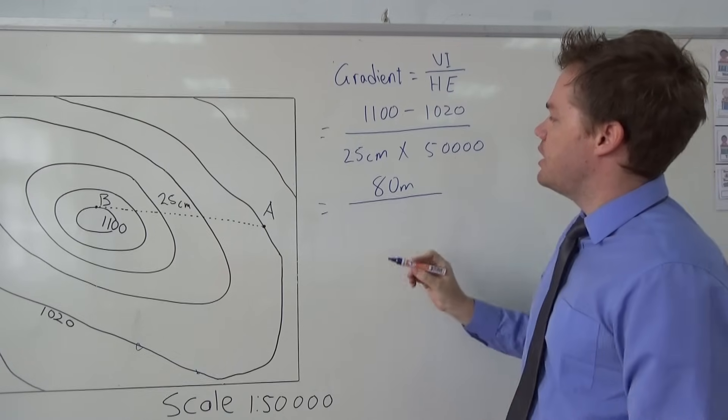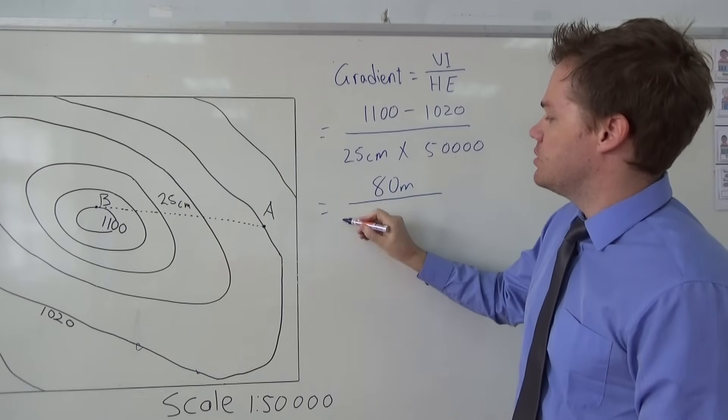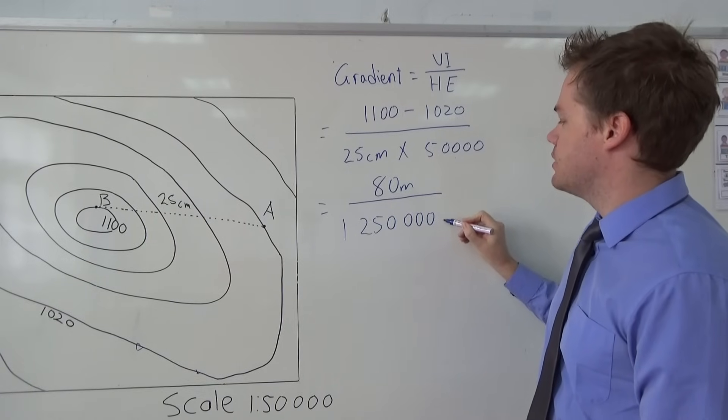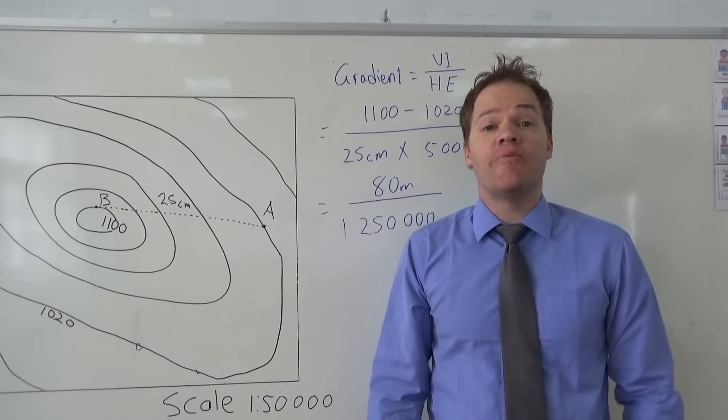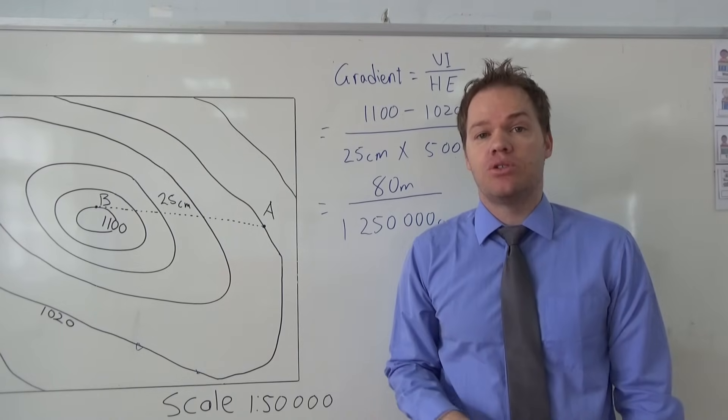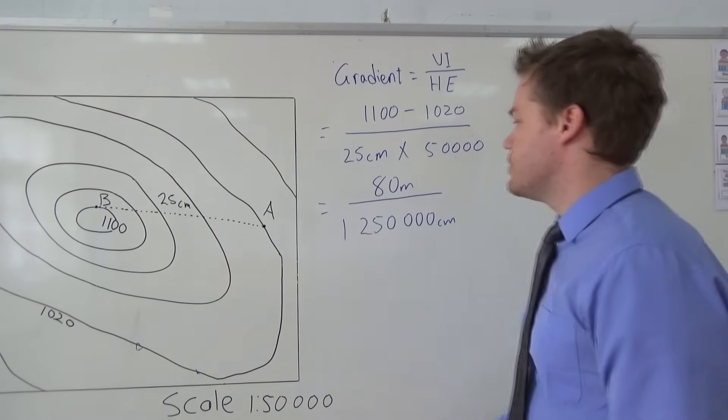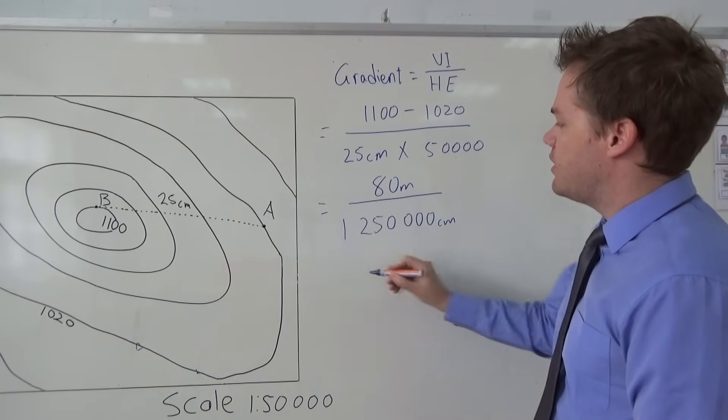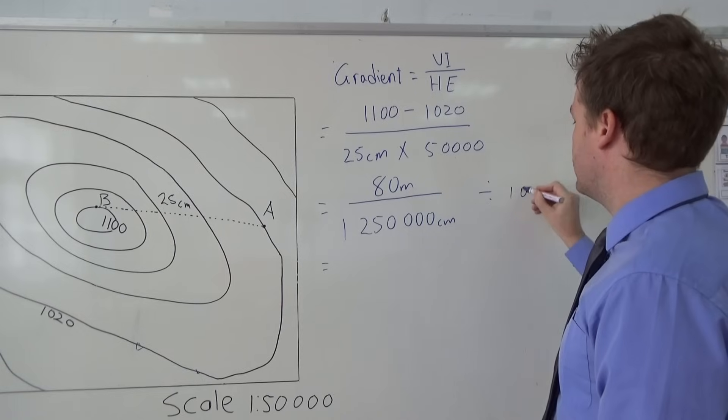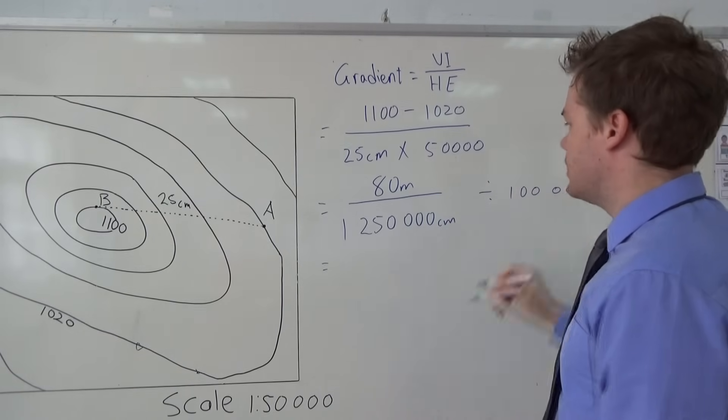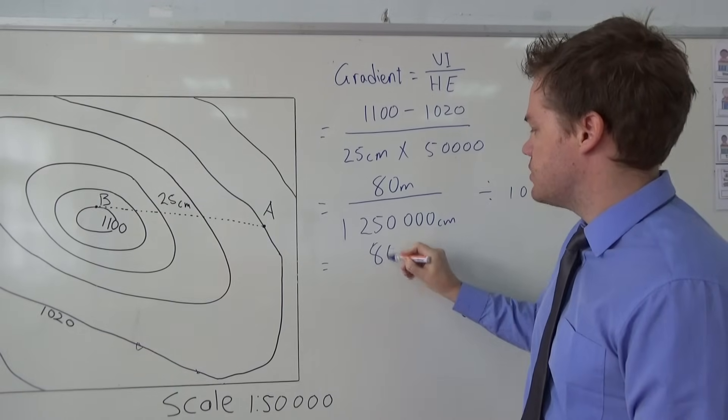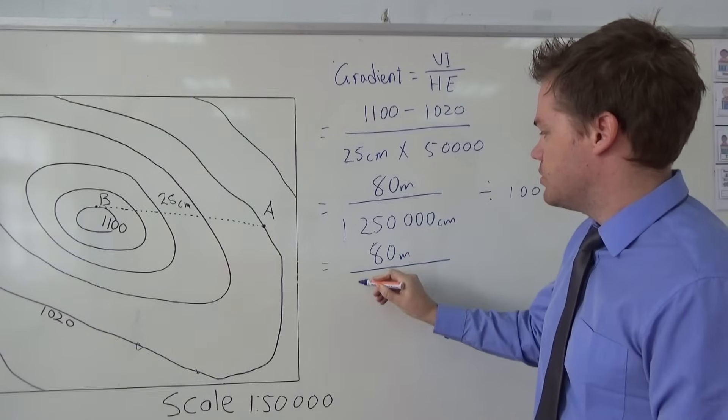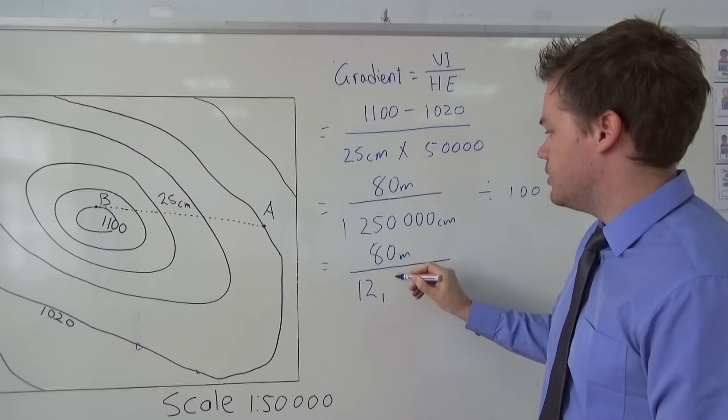And here we have to do a little calculation. This will give you a total of 1,250,000 centimeters. Now obviously you want to convert centimeters to kilometers. So how do we do this? We say 1,250,000 divided by 100,000, and this will give you—so let's just write that amount—this will give you a total of 12.5